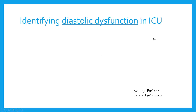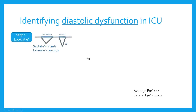Identifying diastolic dysfunction in the ICU is actually very simple. If you remember from the last lecture, there is one marker that we can always start with because that's our most sensitive and specific marker of diastolic dysfunction, and that is our E-prime velocity. So let's just start by looking at E-prime.